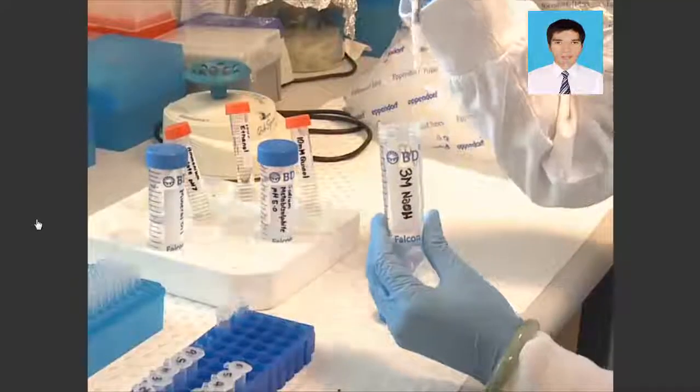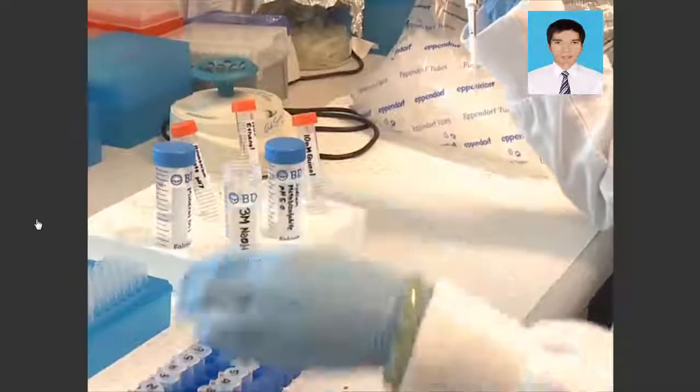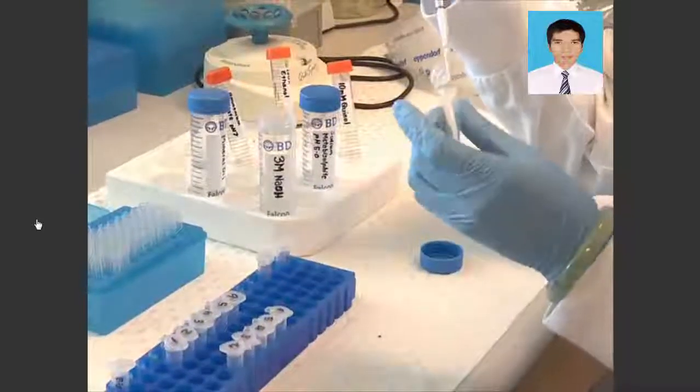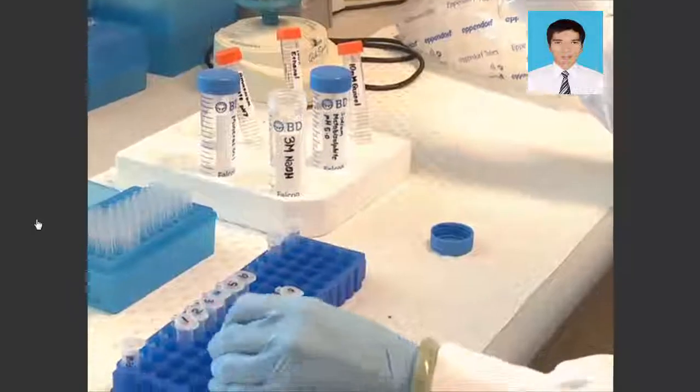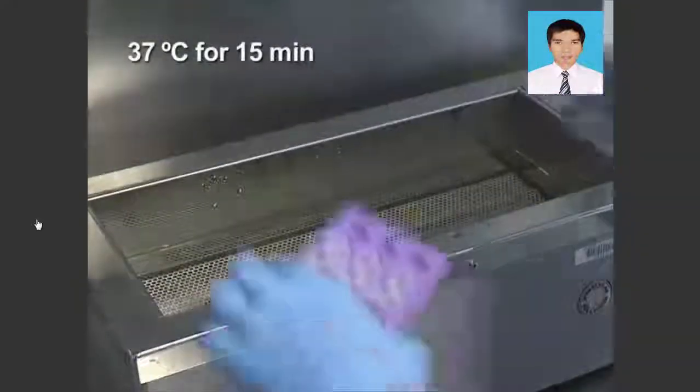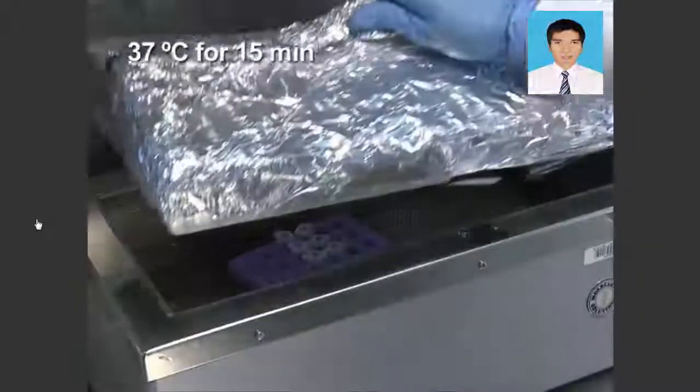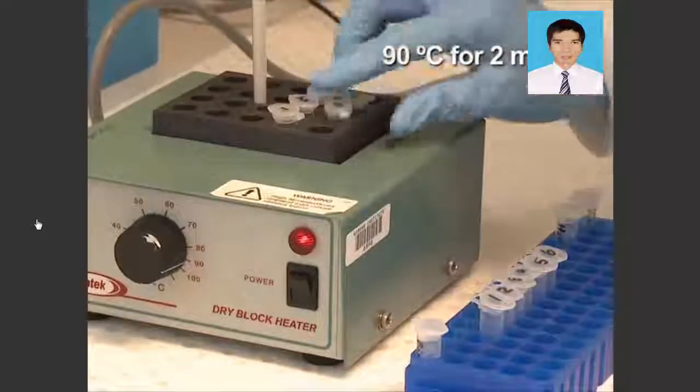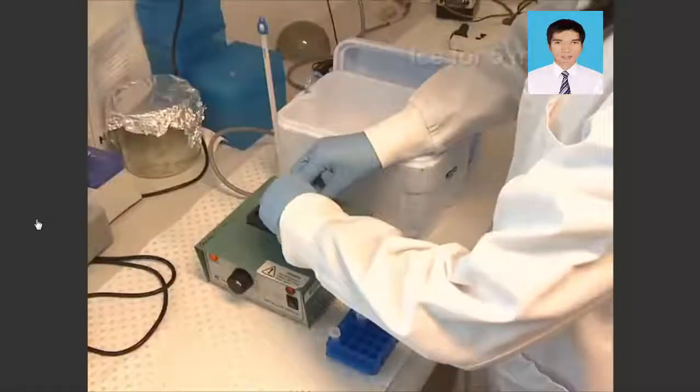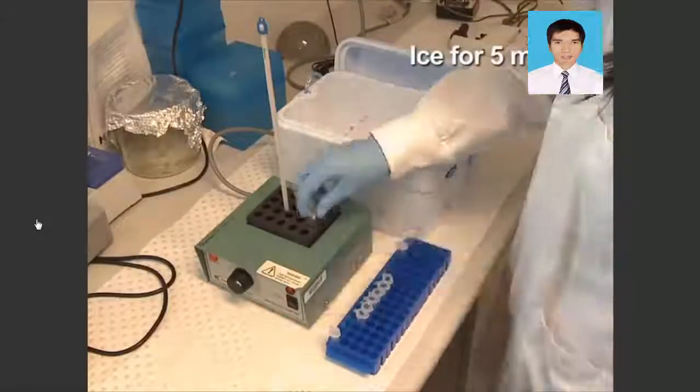Then denature the genomic DNA by adding 2 microliters of freshly prepared 3 molar sodium hydroxide to a final concentration of 0.3 molar. Incubate the samples at 37 degrees Celsius for 15 minutes in a water bath, followed by incubation at 90 degrees Celsius for 2 minutes in a heat block. Immediately place the tubes on ice for 5 minutes.